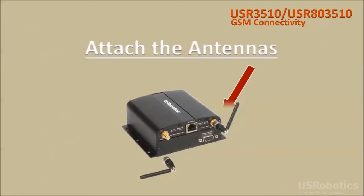To get connected, first attach the two antennas that are included with the gateway to the two SMA connectors on the top of the gateway's front panel.